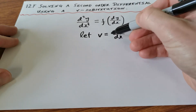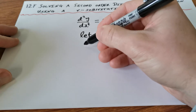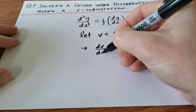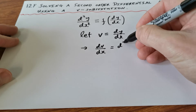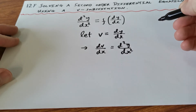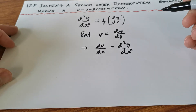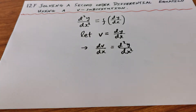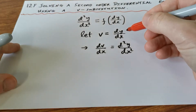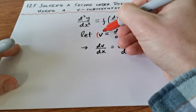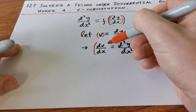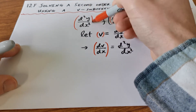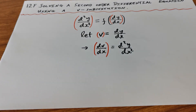We take the derivative on both sides of this equation with respect to x. Taking the derivative of V with respect to x gives dV/dx, and on the right-hand side, taking the derivative of dy/dx with respect to x gives the second derivative d²y/dx². Then we go back to our original equation, substitute V in for dy/dx and dV/dx in for the second derivative. That's how we solve a second-order differential equation using a V-substitution.